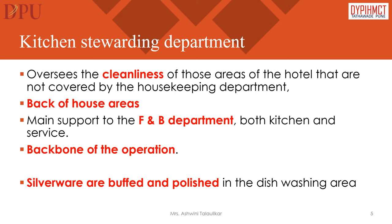Kitchen stewarding department functions include: It oversees the cleanliness of those areas of the hotel not covered by the housekeeping department, mainly back-of-house areas such as kitchen, cafeteria, corridors, receiving and store areas, and administrative offices located in the back-of-house. Generally, this team is the main support to the food and beverage department, both kitchen and service. The kitchen is the only area in the hotel restricted to the housekeeping department for maintaining its cleanliness. The kitchen stewards become the backbone of the operation, constantly engaged in cleaning kitchen floors and washing utensils and supplying them to the cooks to maintain smooth operation.